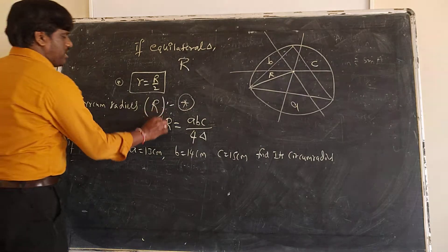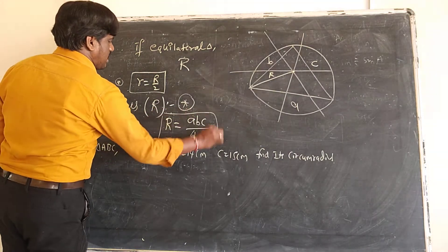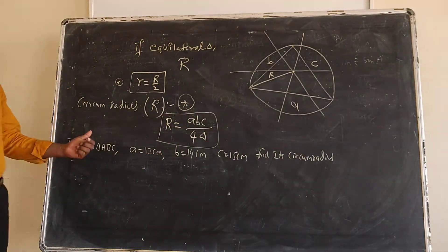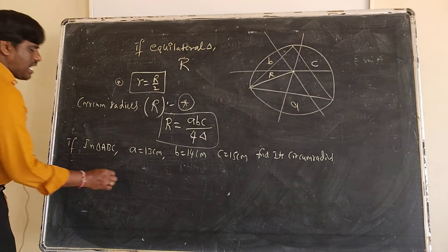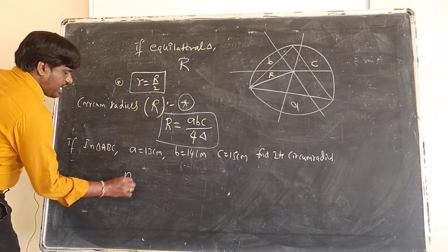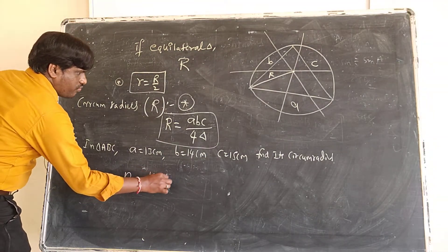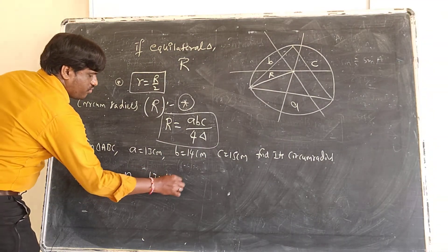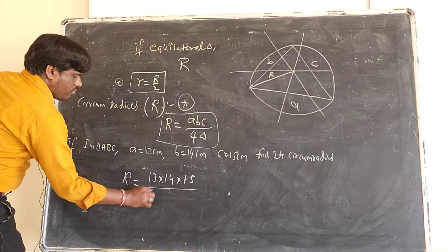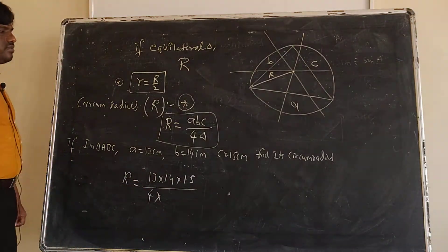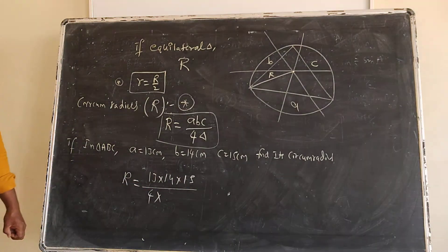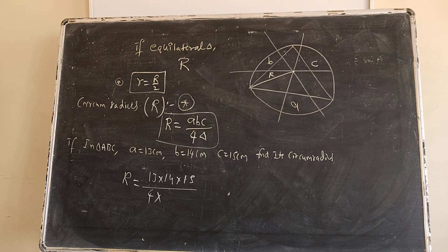R is equal to (13 × 14 × 15) divided by 4 times the area of the triangle — this is the most important formula, asked most times. The area of the triangle can be found using Heron's formula: √(S(S−A)(S−B)(S−C)).